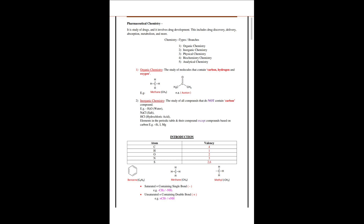The second example is acetone, in which carbon, oxygen, and hydrogen are also included. This whole scenario is called organic chemistry. The second type is inorganic chemistry — the study of all compounds that do not contain carbon, meaning carbon is absent in their structure.